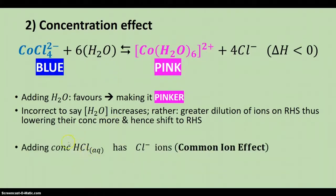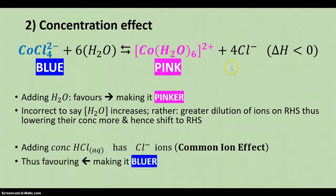Adding concentrated hydrochloric acid is adding the chloride ions in the hydrochloric acid, which is common with the chloride ions on this side. So we say it's the common ion effect. Adding more chloride ions thus drives the reaction in the reverse direction, making it bluer.